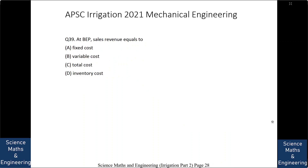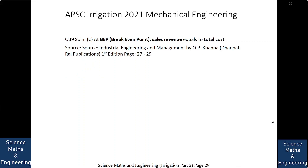At breakeven point, sales revenue equals to: (a) fixed cost, (b) variable cost, (c) total cost, or (d) inventory cost. The answer is at breakeven point sales revenue is equal to total cost. Basically with breakeven point we try to understand how many units we need to sell or how many months it will take to recover our total cost, so that after that we can start making profit.